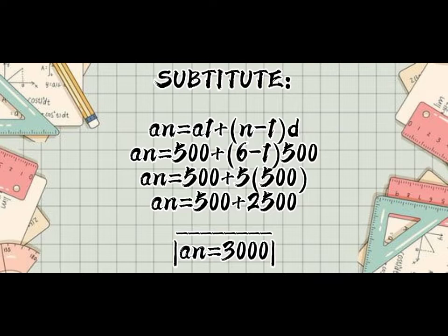Next, A sub N equals 500 for A sub 1 plus open parenthesis N is 6 minus 1 close parenthesis. Common difference is 500. So, A sub N equals 500 plus 5 times 500, which equals 500 plus 2,500. So, the total is 3,000.